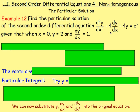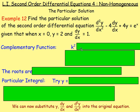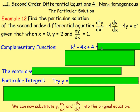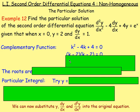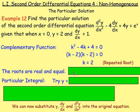The first thing we do is find the complementary function. For that, we get the auxiliary equation by taking the coefficients of d²y/dx², dy/dx, and y. So we get 1k² − 4k + 4 = 0. If you factorize that, you get (k−2)² — it is a repeated root, k equals 2.